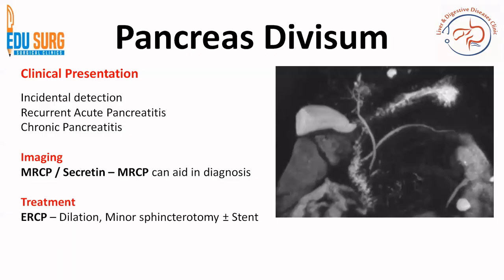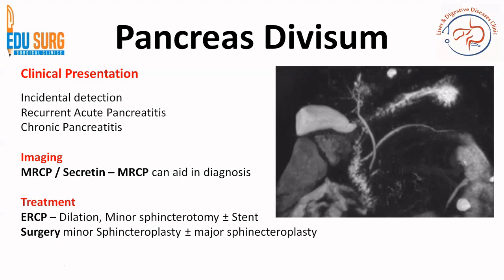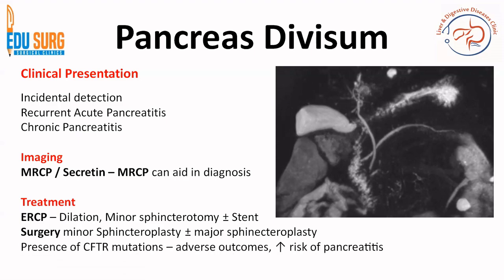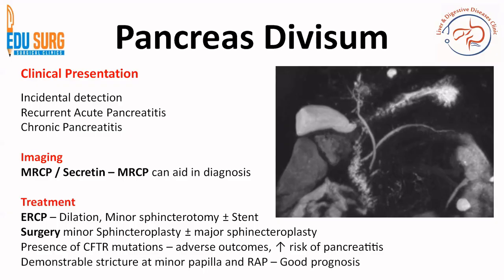Endoscopy is the treatment of choice for pancreas divisum. Options include dilation of the minor papilla or minor sphincterotomy with or without stenting of the minor pancreatic duct. Surgery may involve major sphincteroplasty. When CFTR mutations are present, patients have an increased risk of pancreatitis with pancreas divisum, and treatment is associated with increased adverse outcomes. On the other hand, a demonstrable stricture at the minor papilla on MRI, combined with symptomatic pancreas divisum, predicts better prognosis from treatment.